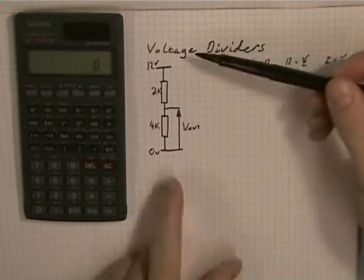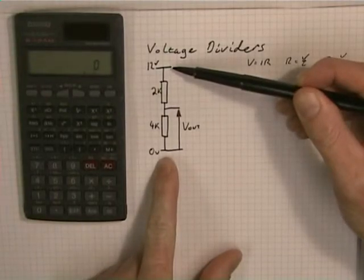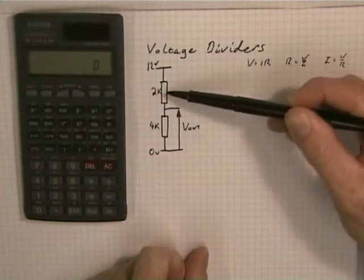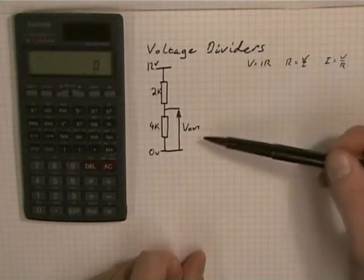Here we have a circuit. What we know about at the start is there's 12 volts between that point and that point. We know that resistance is 2k and that resistance is 4k. What we want to find is V out.